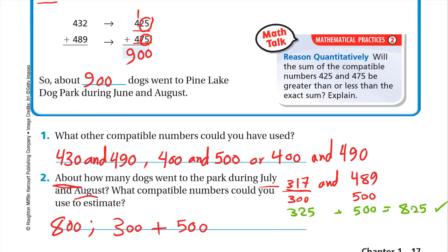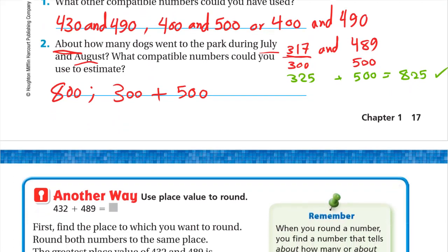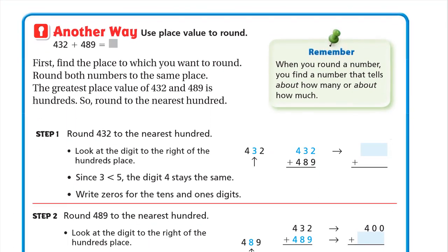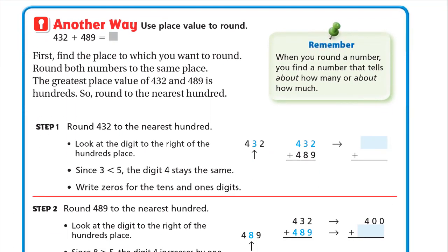This is an estimate, it means a number close to the exact number. So 825 is correct, 800 is correct. Even if you get like 850 or 750 they are correct. Now get the next page.